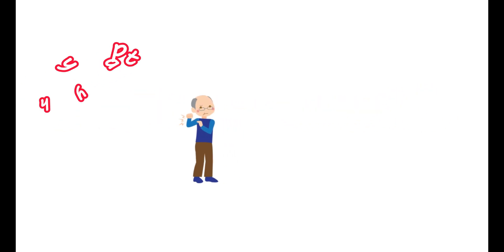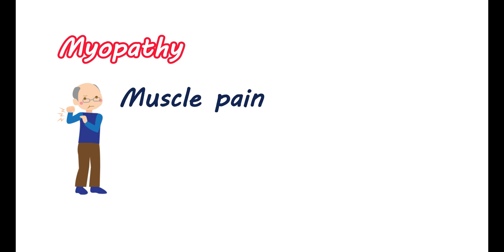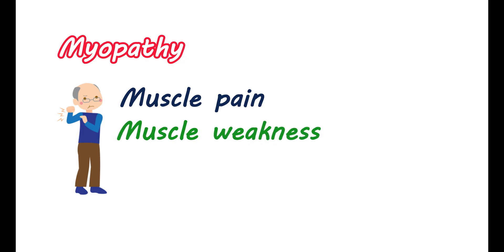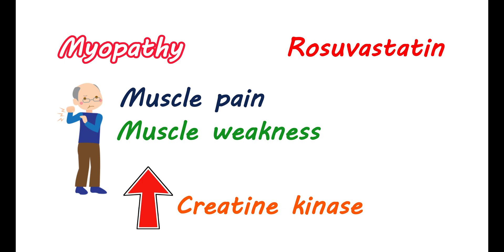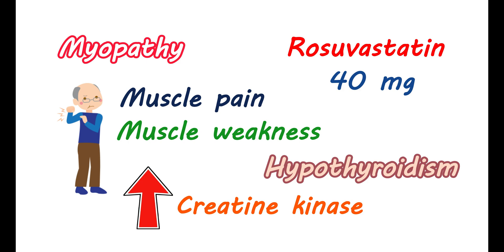Myopathy is a condition of muscle dysfunction that affects skeletal muscle, resulting in symptoms like muscle pain, tenderness, weakness, spasms, and easy fatigue due to muscle damage. Even though the severity is less compared with other statins, rosuvastatin can induce myopathy. This muscle damage results in elevated creatine kinase levels. Myopathy can be observed at any dose, but is more pronounced at the highest dose of 40 mg. Risk factors include acute renal failure, age above 65 years, and hypothyroidism.